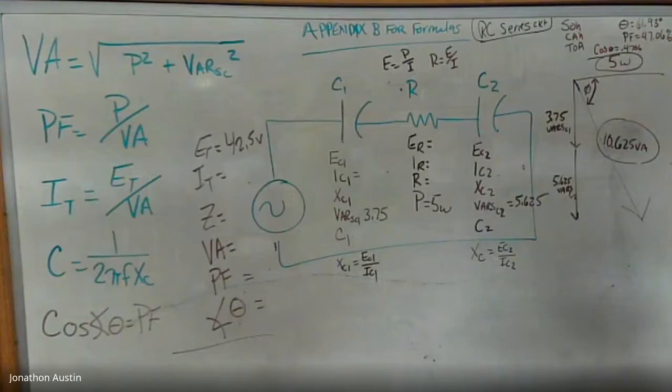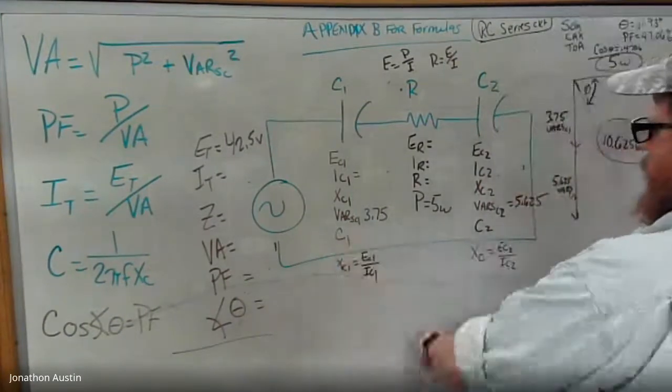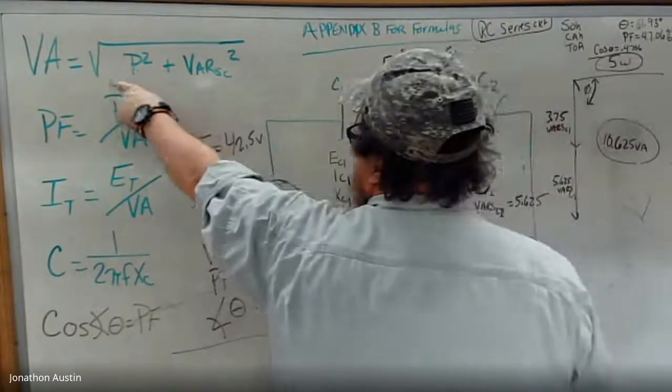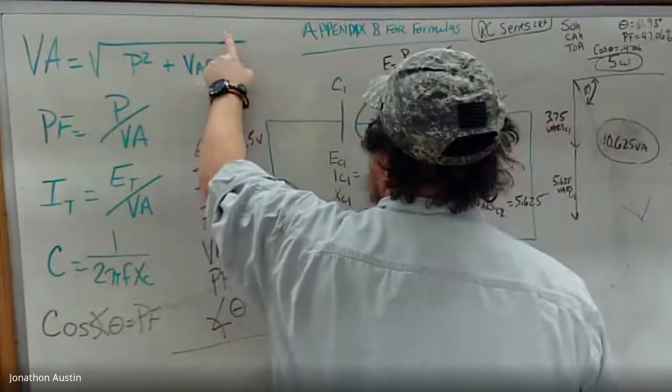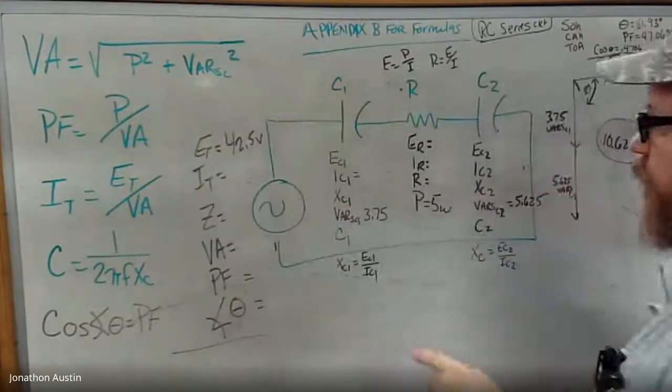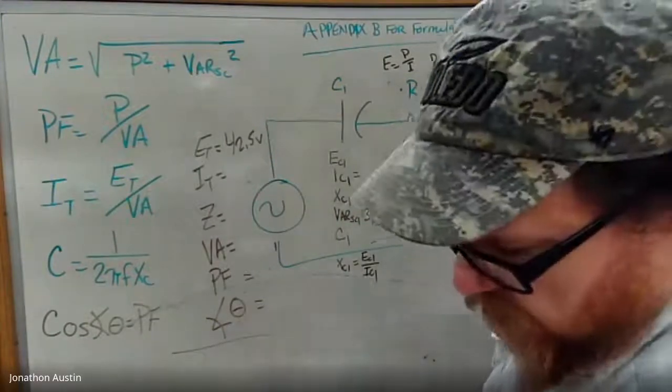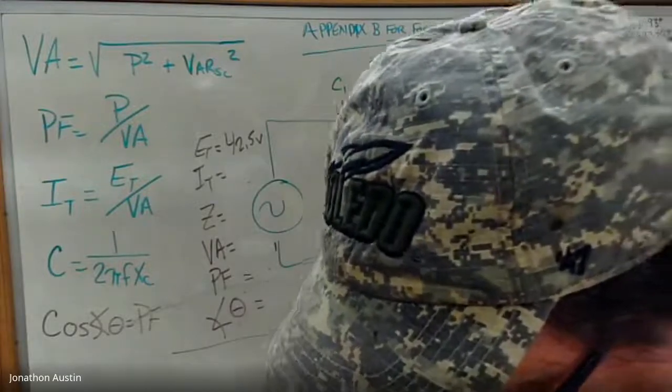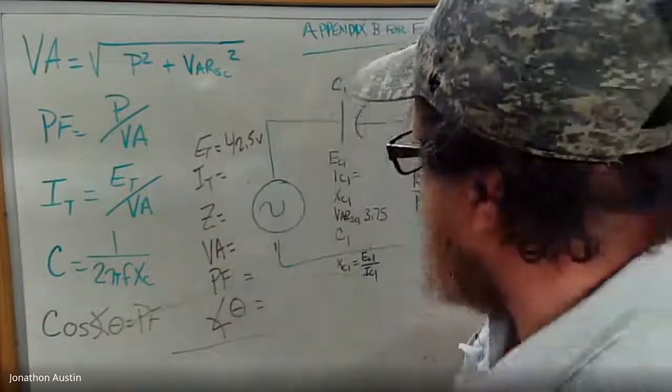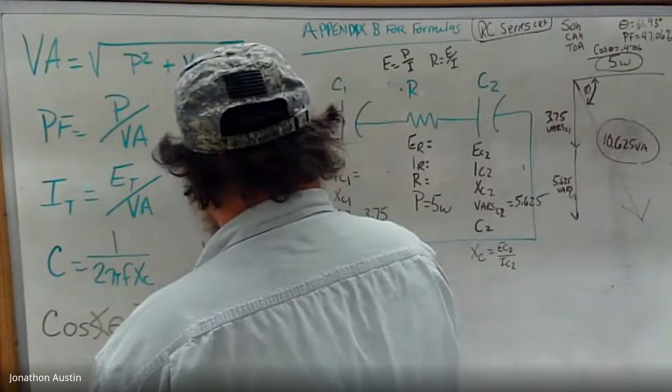So in this case, we've been given our VARs at capacitor 1, capacitor 2, and our power. We're going to use VA volt amps equals P power squared plus VAR squared square root of. So, square root of power squared plus VAR squared, and that's going to give us 10.625 volt amps.